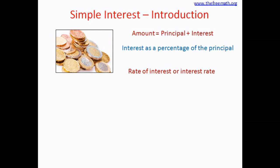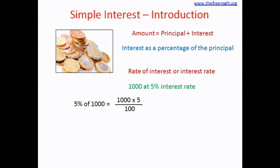Let's take an example. Suppose you borrow 1000 rupees at a 5% interest rate. How do you calculate the interest? It is exactly like calculating a percentage. Five percent of 1000 equals 1000 multiplied by 5 divided by 100. We cancel out two zeros in the numerator and denominator, so we have 10 multiplied by 5, which is 50. So if you borrow 1000 rupees at a 5% interest rate, the interest you have to pay is 50 rupees.